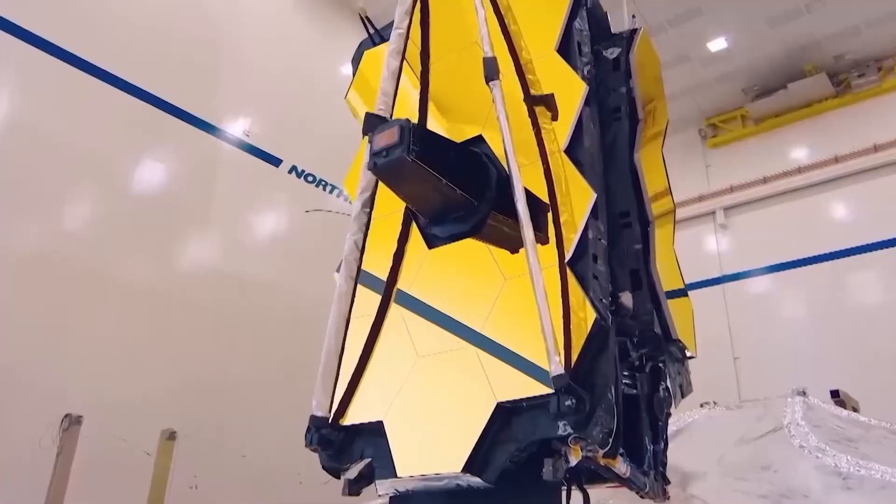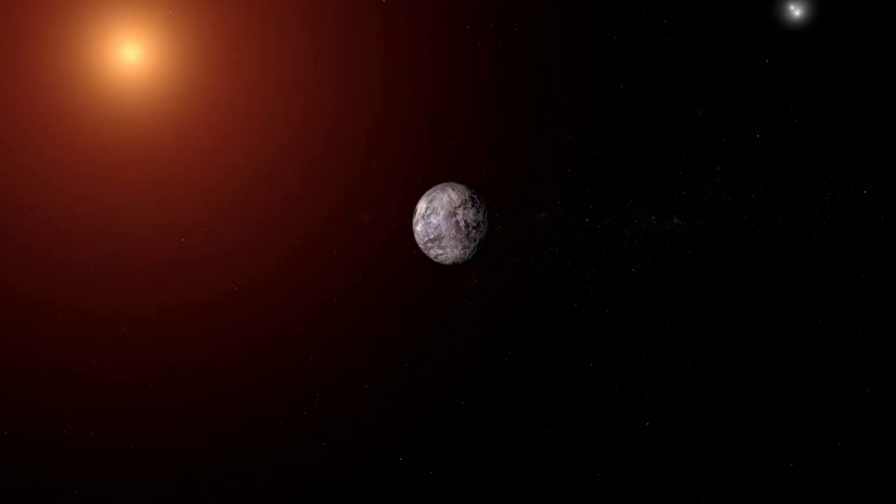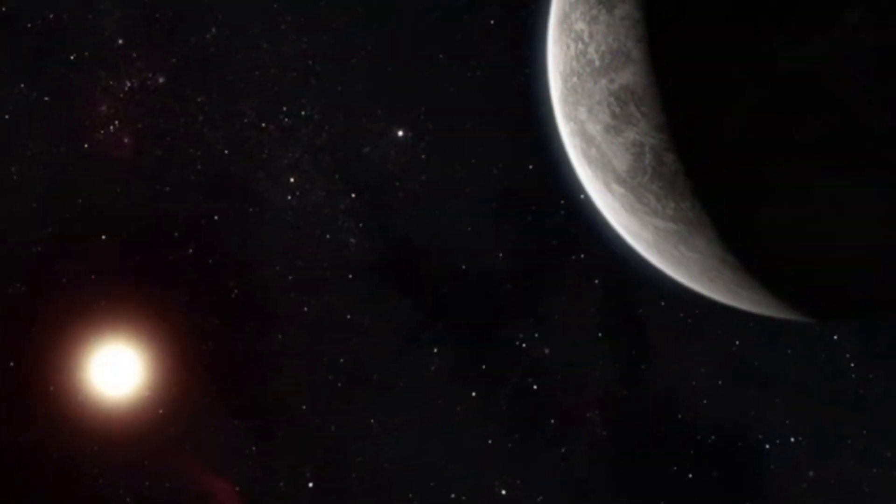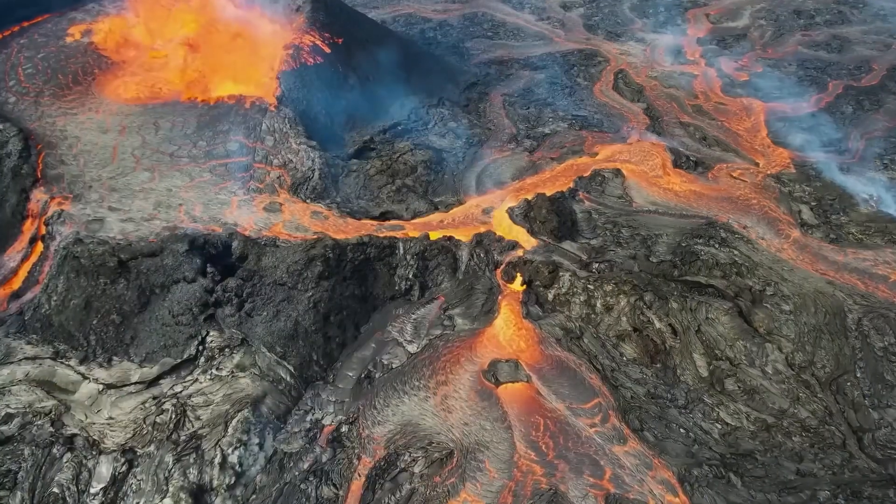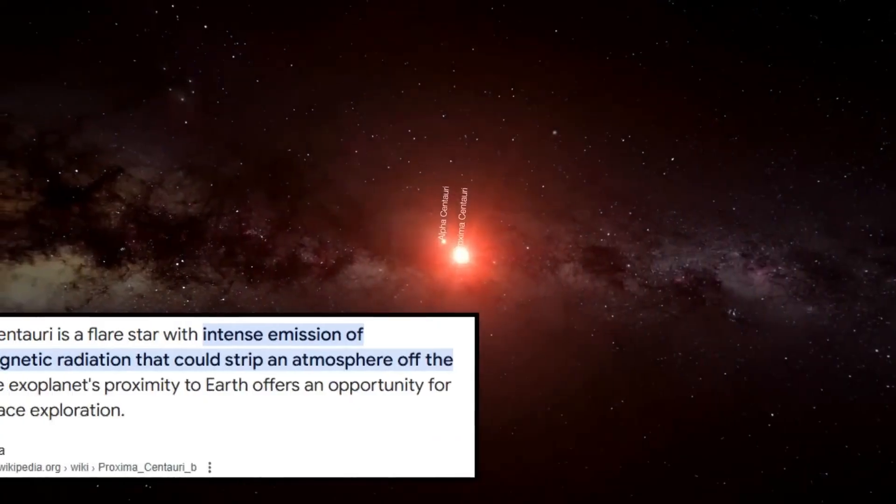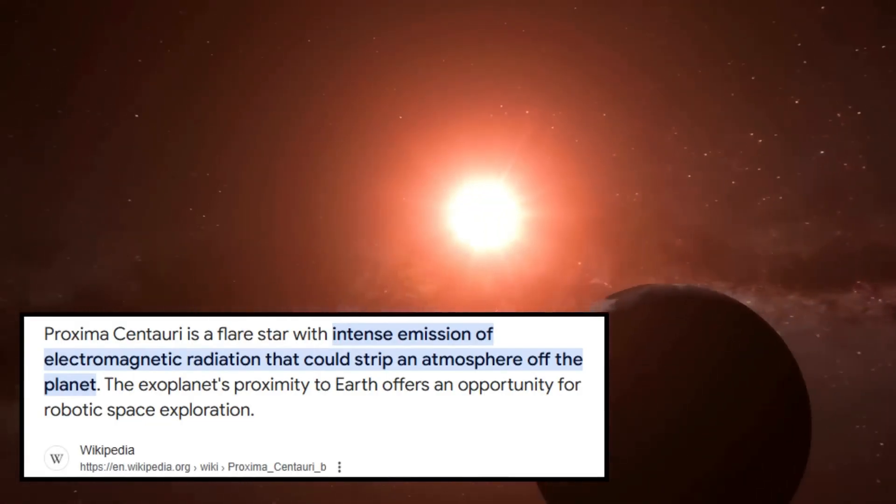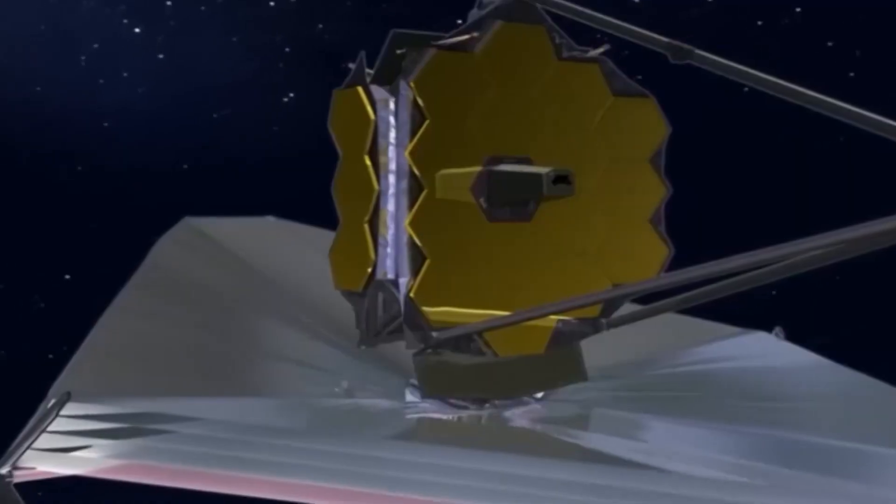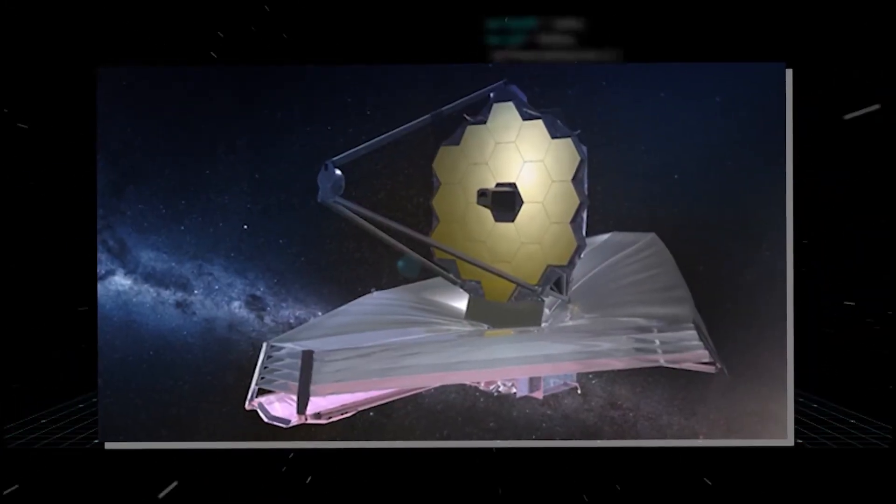Building the James Webb Telescope required not just advanced materials but also cutting-edge technology. For example, the telescope uses a new type of infrared detector that is far more sensitive than anything used before. These detectors can capture the faintest signals from the universe, allowing scientists to observe galaxies that formed billions of years ago. The telescope's instruments include a near-infrared camera (NIRCam), a near-infrared spectrograph (NIRSpec), a mid-infrared instrument (MIRI), and a fine guidance sensor near-infrared imager and slitless spectrograph (FGS-NIRISS). Together, these instruments allow the telescope to study everything from the formation of stars to the atmospheres of distant planets.